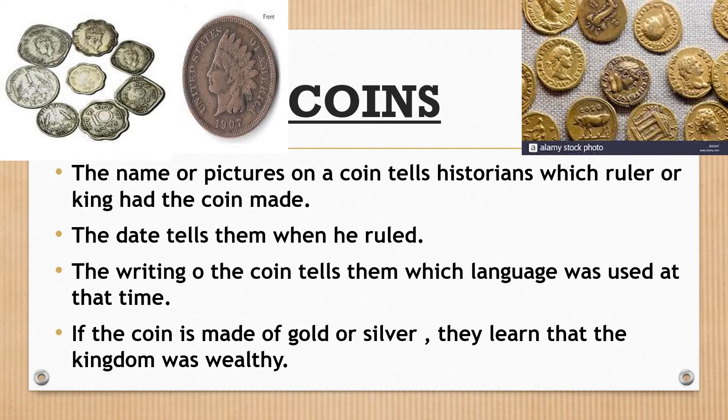Indian coins are used as bimetallic copper. The shape is circular in India. The earliest coins in India were mostly silver.